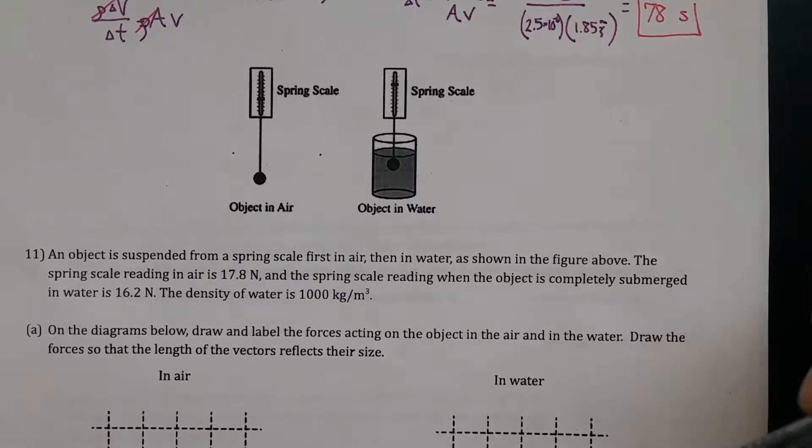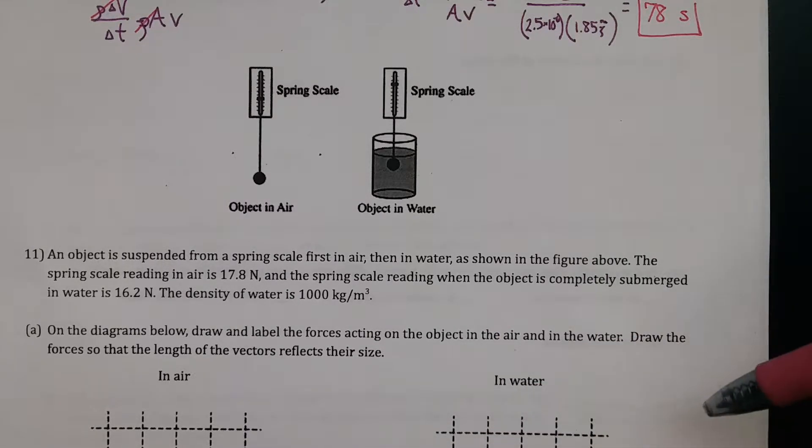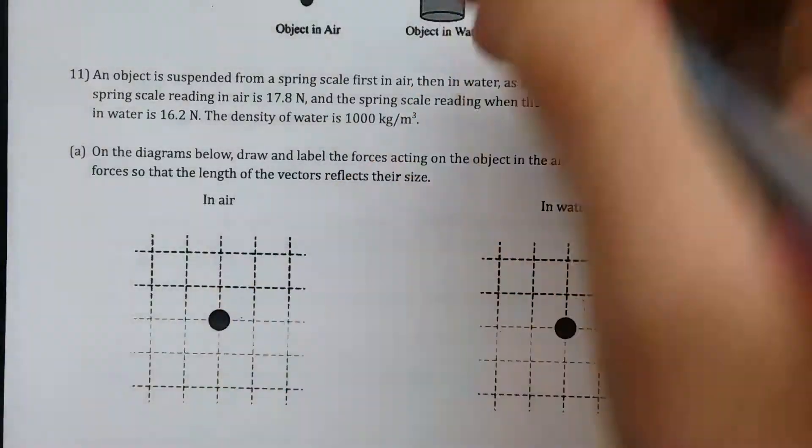All right, so a lot like the lab we did. On the diagrams below, draw and label the forces acting on the object in the air and in the water. Draw the forces so that the length of the vectors reflect their size. Okay, so in the air is pretty easy.